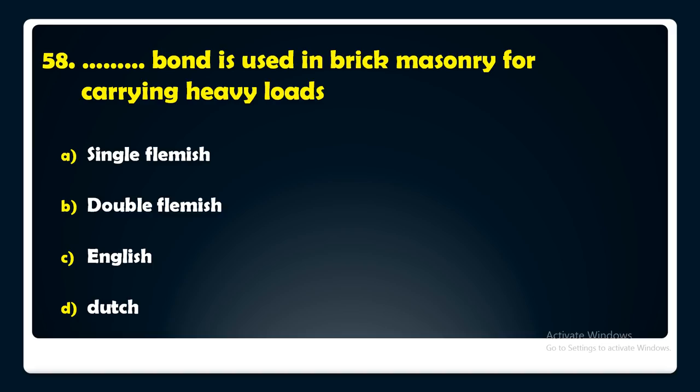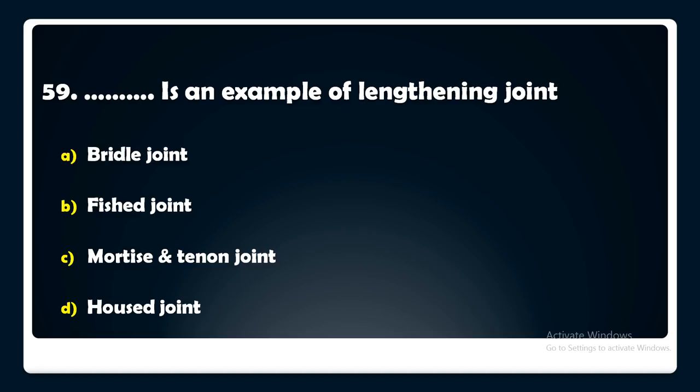Which of the following is an example of a lengthening joint — Butt joint, Fished joint, Mortise and Tenon joint, or Housed joint? The answer is: a Fished joint is an example of a lengthening joint.